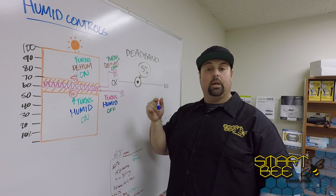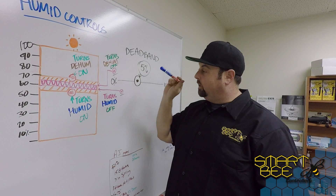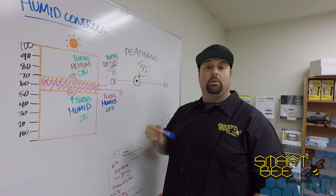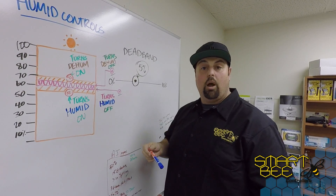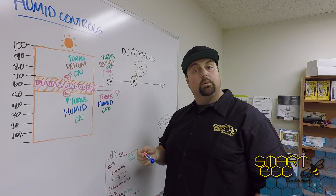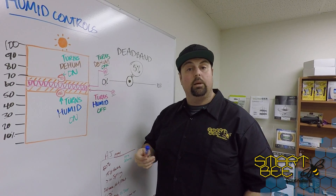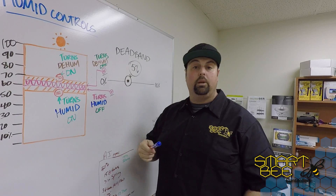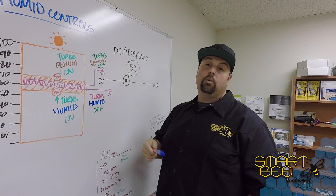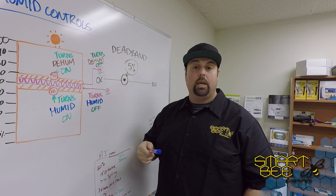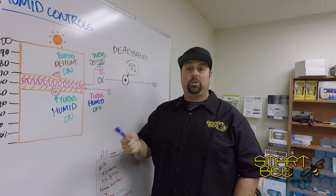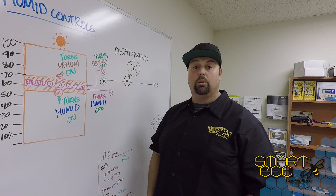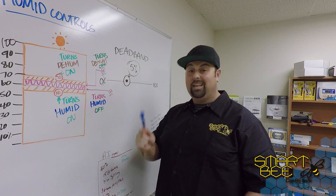So that is thresholds and dead bands in a nutshell. Make sure that you continue to like and subscribe to all of the Smart Bee Controllers how-to and instructional videos. And of course, if you have any questions on how you can automate your garden or dial in for greater yields as well as disaster management, make sure you reach out to us at www.smartbeecontrollers.com. Happy Gardening!